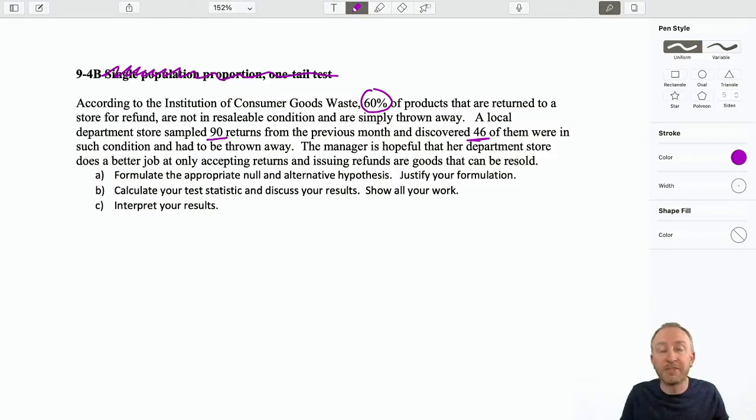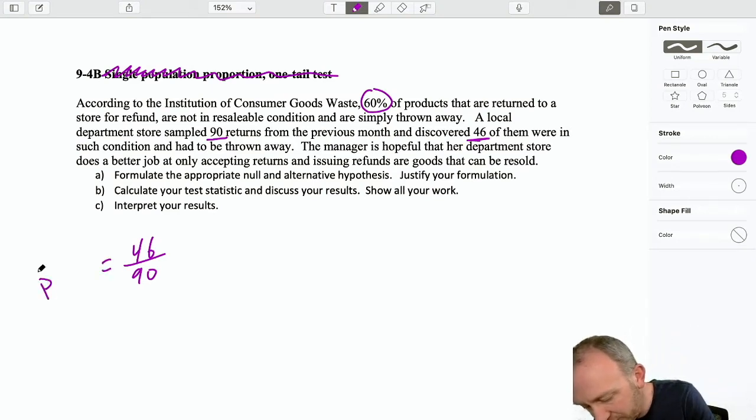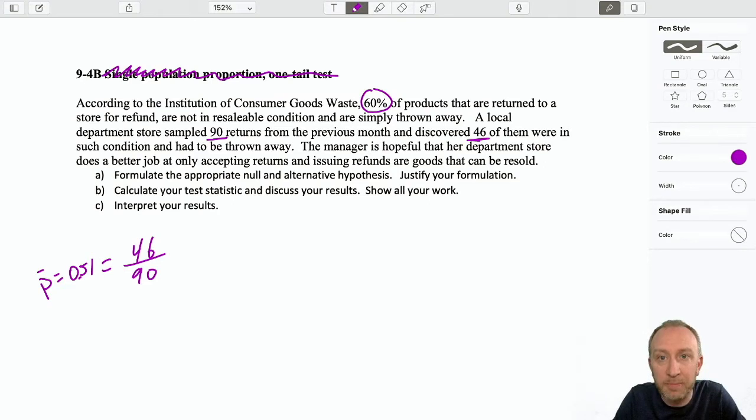90 returns from the previous month and found that 46 of them had to be thrown away. So that right there tells me I'm working with a proportion. Out of 90 returns, 46 of them met this criteria. In the previous example it was supporting a conservative candidate, in this problem it's being thrown away. So this means our sample proportion here is 0.51. The manager is hopeful that her department store does a better job at only accepting returns and issuing refunds on goods that can be resold, meaning that they throw away a smaller proportion of their returns.